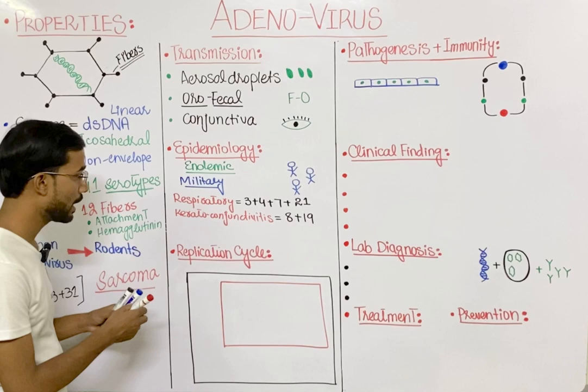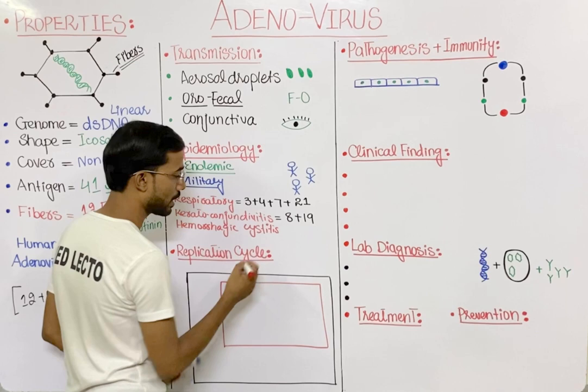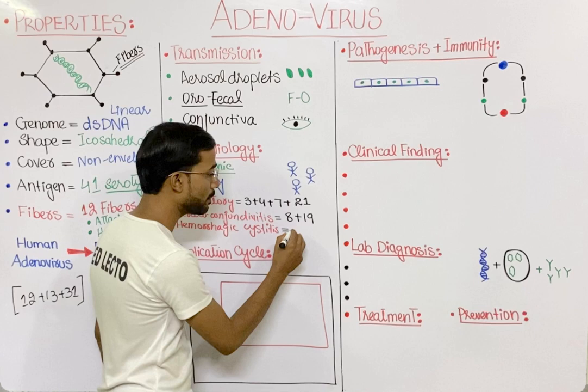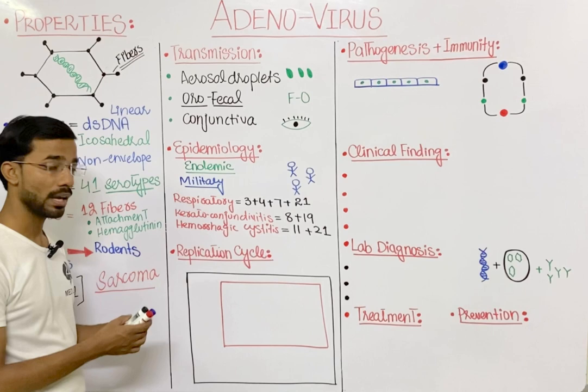The third disease is hemorrhagic cystitis, caused by serotypes 11 and 21 of the adenovirus. Hemorrhagic cystitis involves inflammation of the urinary bladder along with bleeding.